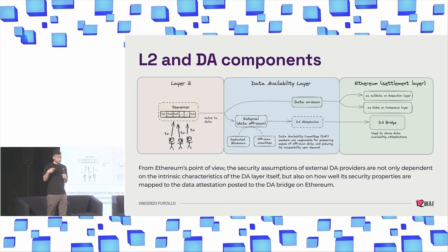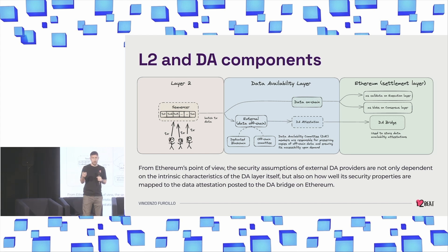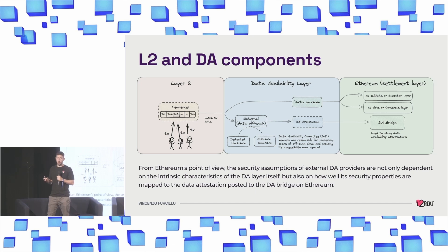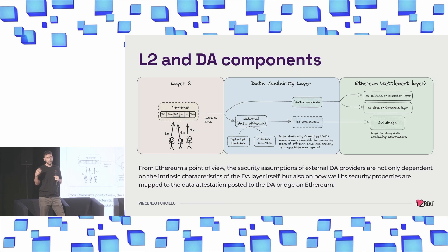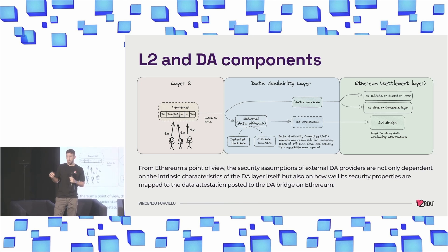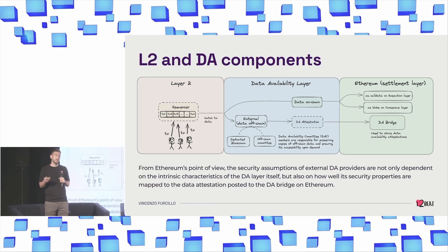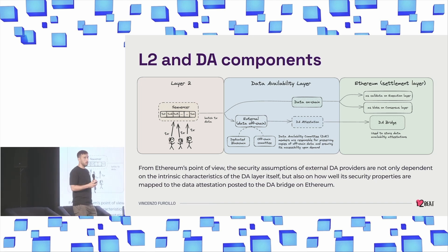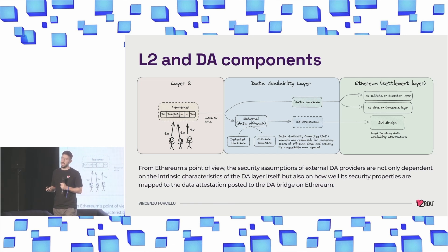If the data is on-chain, Ethereum is aware that the data has been posted — a data commitment is posted together with the data. But if the rollup is using an external data availability layer, you need a data attestation, which is posted to a DA bridge and acts as an oracle on Ethereum for the DA layer.